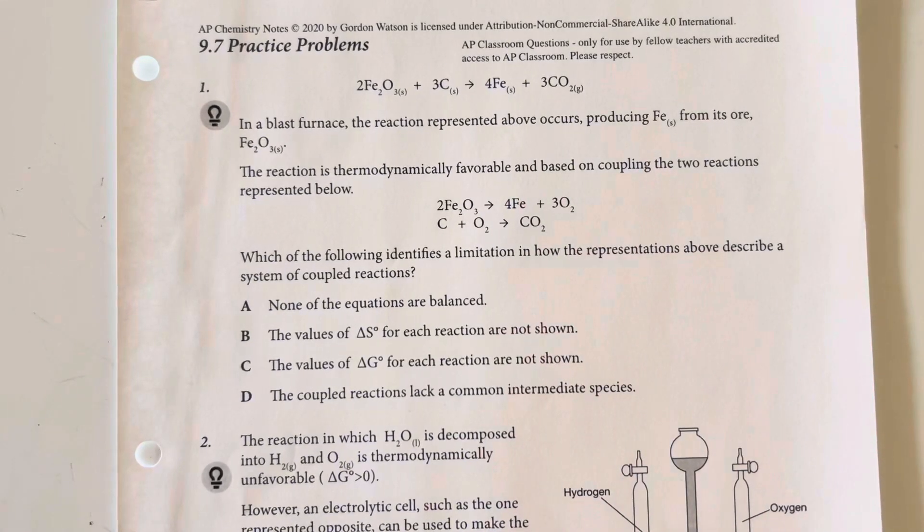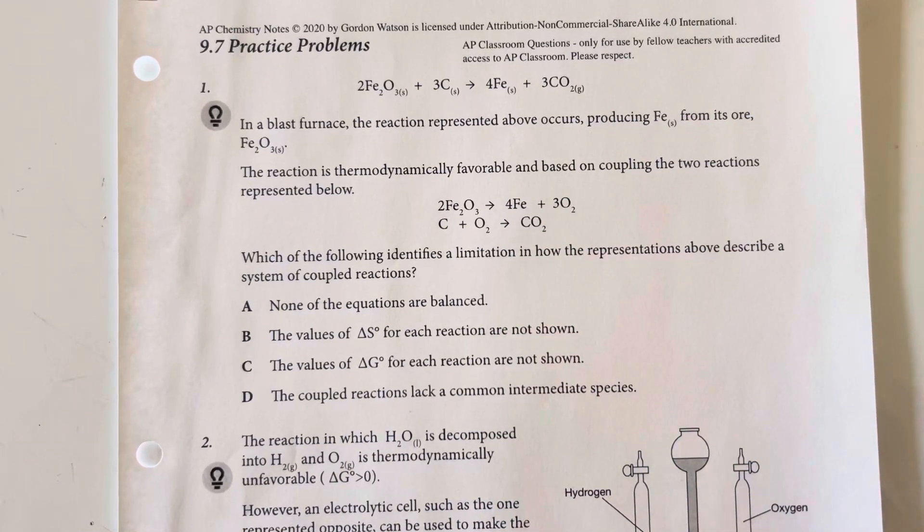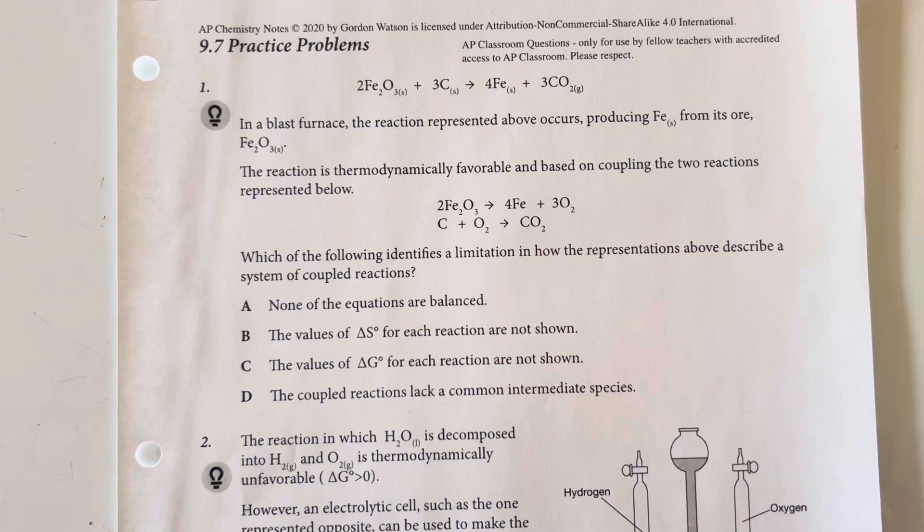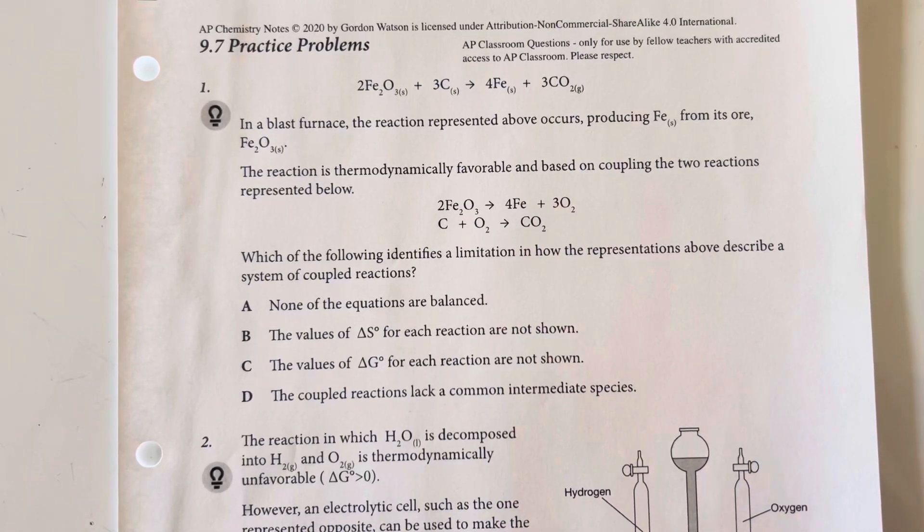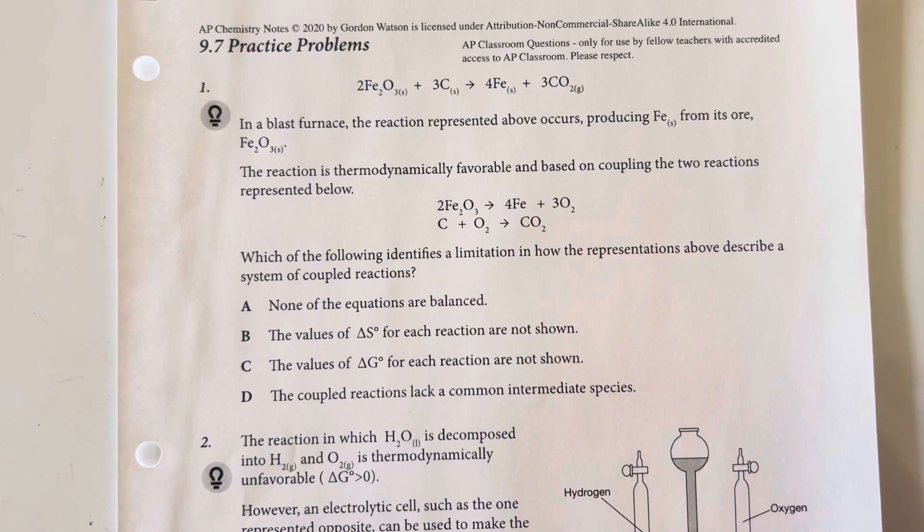9.7 practice problems. In a blast furnace, the reaction represented above produces iron from its ore, iron 3 oxide. The reaction is thermodynamically favorable and based on coupling of two reactions represented below.